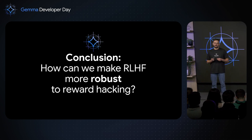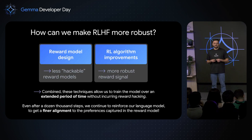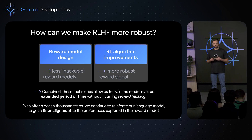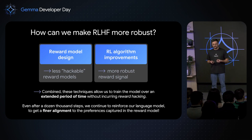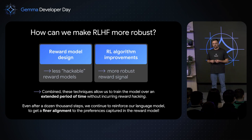In conclusion, how can we make RLHF more robust to reward hacking? I showed two approaches: first, designing more robust reward models that are less hackable through weight averaging, most effective when training starts from the same distribution; and second, improvements to the RL algorithm itself. Combined, these techniques allow us to train the model over an extended period of time without incurring reward hacking — and that's responsible for the fine alignment that translates into good LMC scores in chat capabilities, because we align well to what the user intends. Thank you very much for your attention.